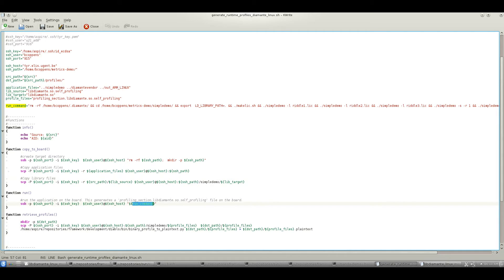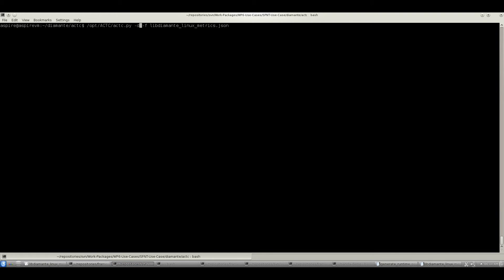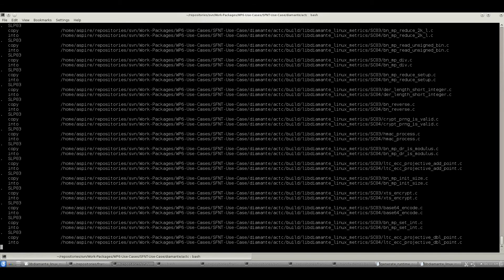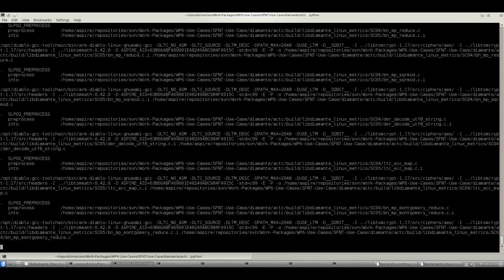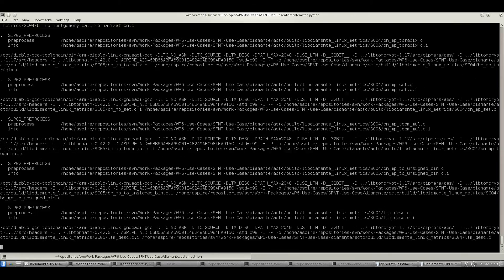It also contains a function that will run a command to execute the binary. In this case, you see here that we will execute it multiple times. So we will actually collect multiple traces. And then there's also a function to copy back the data from the board onto your host where you're compiling the program. Now, we compile the program with our toolchain and deploy the protections. I'm going to speed this up because it takes a while.